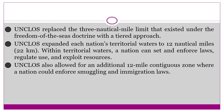UNCLOS replaced the three nautical mile limit that existed under the freedom of the seas doctrine with a tiered approach. UNCLOS expanded each nation's territorial waters to 12 nautical miles or 22 kilometers. Within territorial waters, a nation can set and enforce laws, regulate use, and exploit resources. UNCLOS also allowed for an additional 12-mile contiguous zone where a nation could enforce smuggling and immigration laws.